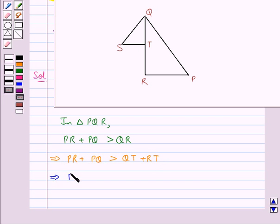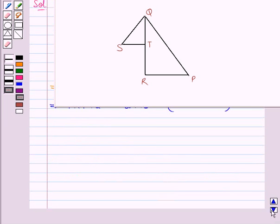Now, this further gives us PR plus PQ is greater than QT plus ST since we know that RT is equal to ST as it is given to us. So, here in place of RT we have written ST.